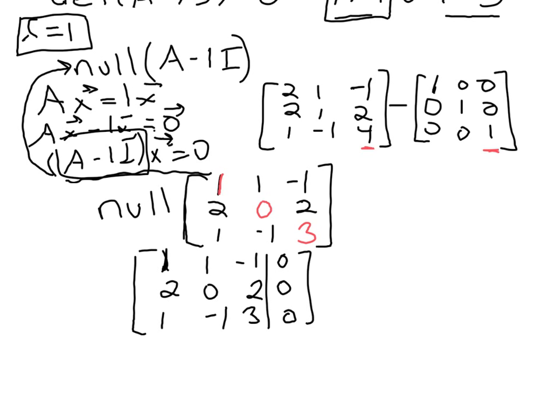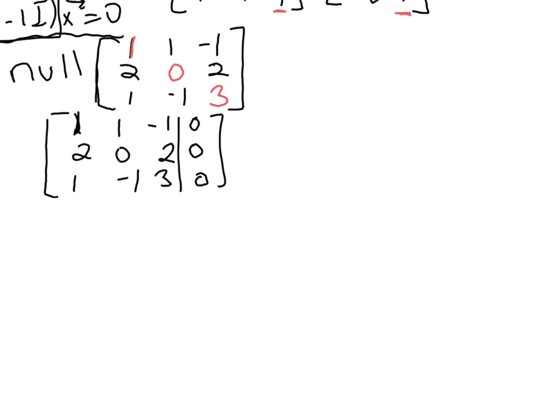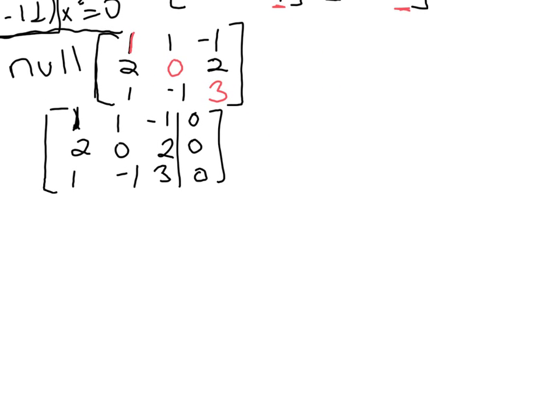So we could do that. The row operations here might feel pretty trivial to you at this point. You've been using them so much. But I'll do negative 2 times row 1 and add that to row 2. I'll also do negative row 1 and add that to row 3. So that'll get me a 0 in this entry here.